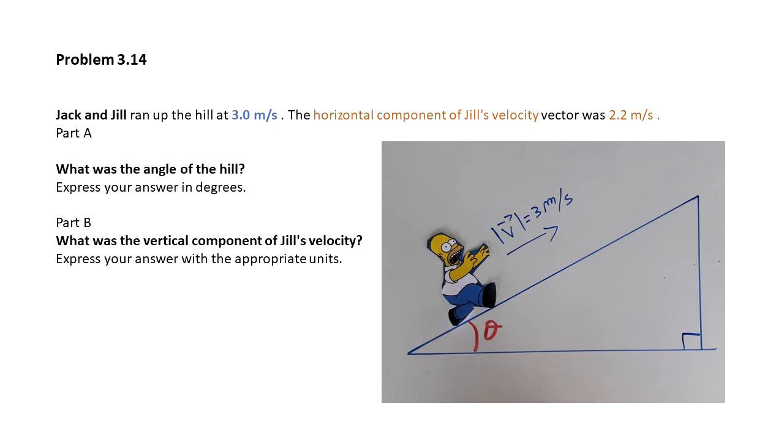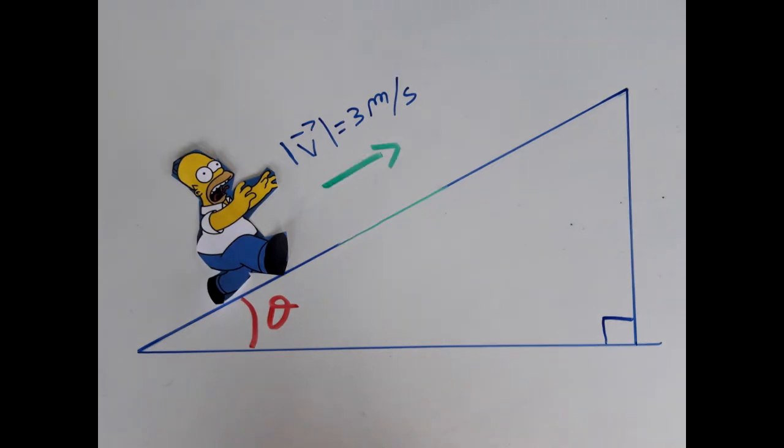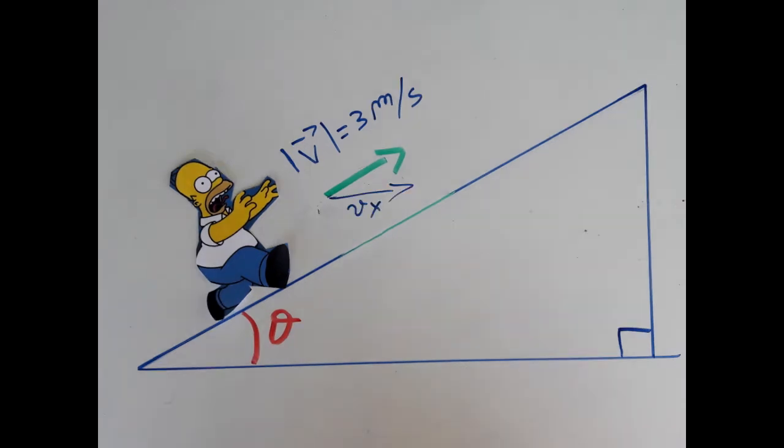We can see that Homer is running uphill with a velocity which magnitude is 3 meters per second and is parallel to the surface of the hill. The magnitude of the velocity is 3 meters per second and you can see that as a green arrow. The blue arrow represents the x component of the velocity. The problem stated that this component is 2.2 meters per second.